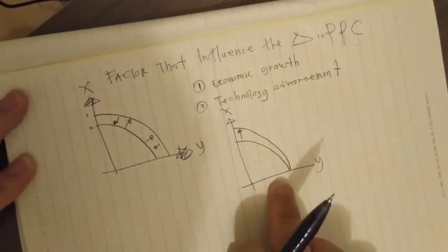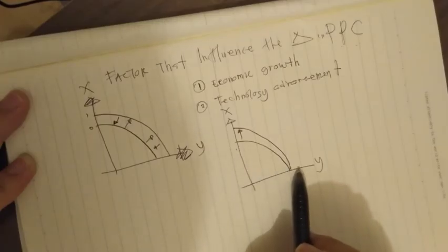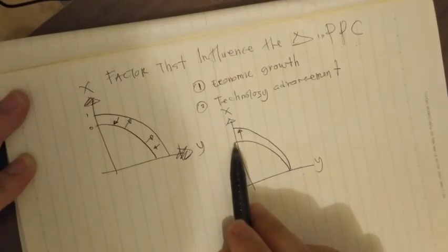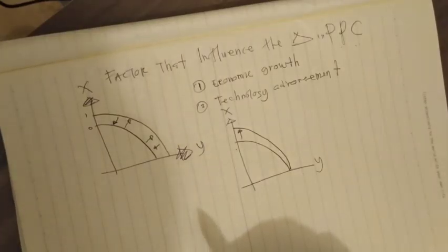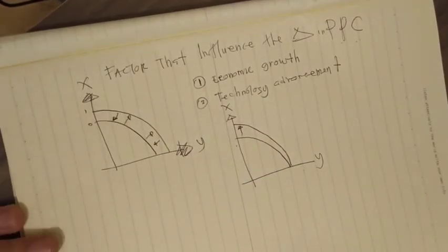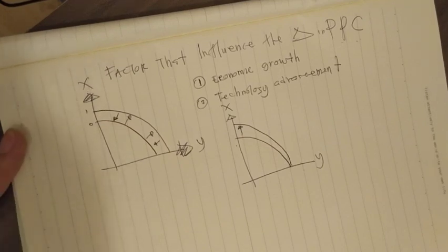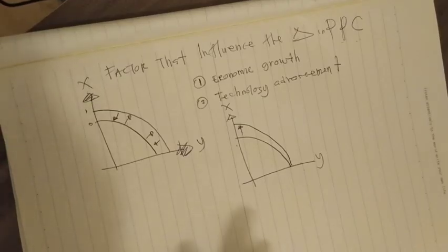Similarly, if technology advancement happens only in Y while X remains constant, then only the Y portion moves outward and X stays constant. Those are the factors that influence the change in the PPC. There are other factors aside from economic growth and technology advancement, which we will discuss later. Thank you very much.